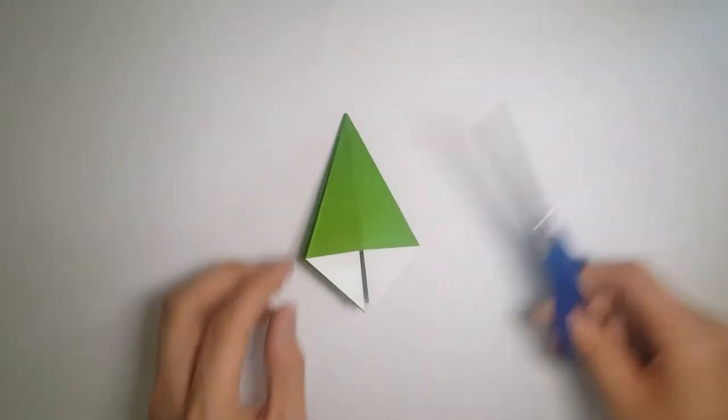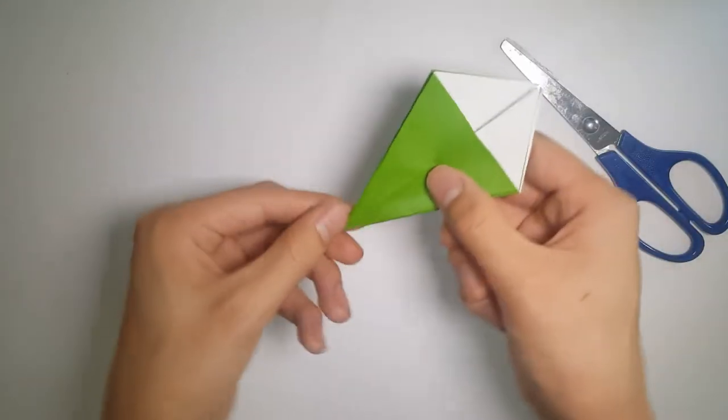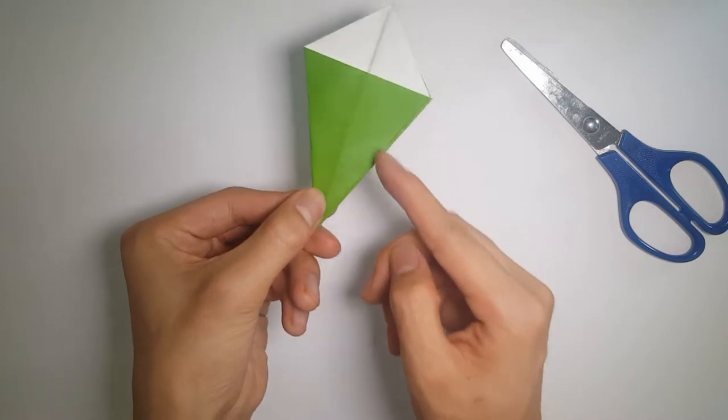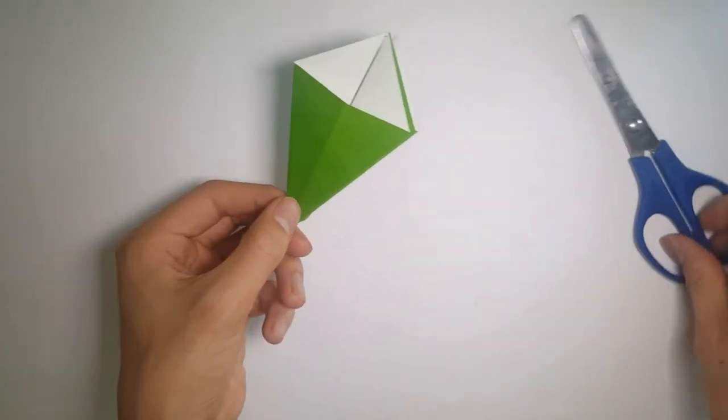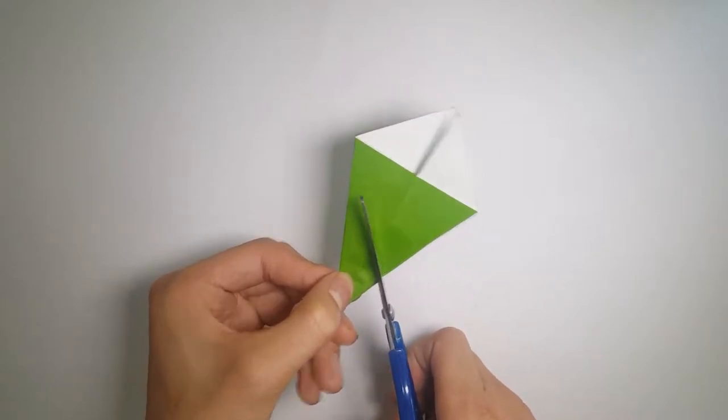It should look something like this, and we're just going to grab our scissors and make three diagonal cuts, each getting bigger from the top to bottom. And we'll do the same for the other side as well.